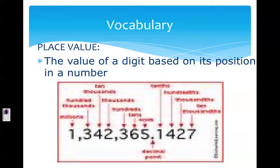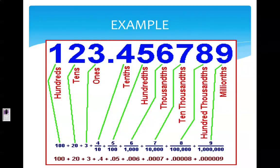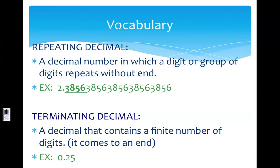The next word is place value. Place value is the value of a digit based on its position in a number. Our whole number place values are ones, tens, and hundreds. On the decimal side, the first is the tenths, then hundredths, thousandths, ten-thousandths, hundred-thousandths, millionths, and so on. Our next word is repeating decimal — a decimal in which a digit or group of digits repeats without end. For example, 3856 repeats throughout and does not come to an end. A terminating decimal is a decimal that contains a finite number of digits — it comes to an end. Our example is 0.25; it doesn't repeat and it doesn't keep going on forever.